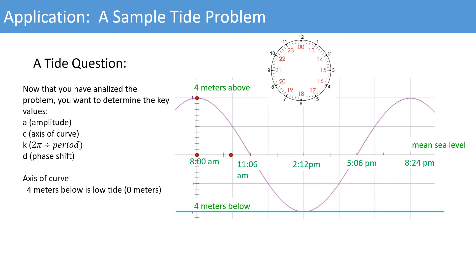The axis of curve is 4 meters below high tide, or we could say 4 meters above low tide. So the axis of curve equals 0 plus 4, giving us C equals 4. The amplitude, the distance between the lowest value and the axis of curve, is also 4. So A equals 4.